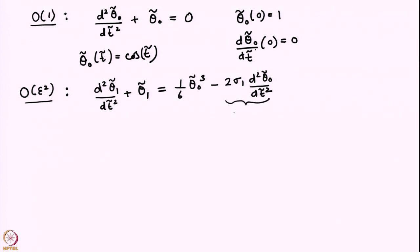This is the additional term compared to the regular perturbation series that we had written. In the regular perturbation series at order epsilon squared this was the only term obtained — there was no second term because there we did not have a sigma, so you can think of all the sigma coefficients as being zero. Now we will have to solve this equation. A natural question arises: how are we going to determine sigma_1, sigma_2, and so on? Let us see how.